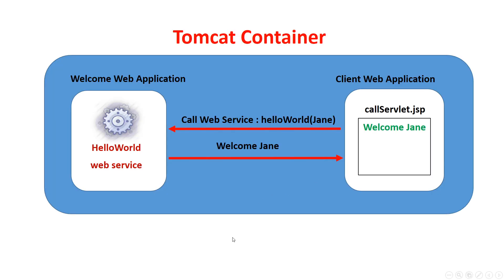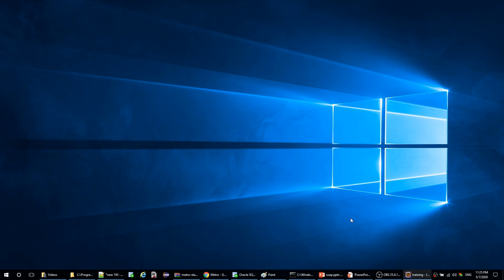In our example, there will be two web applications. The first one exposes a web service and the second one contains a simple JSP file. Inside this JSP file, we will call the web service. It's called Hello World and we pass it a name. The web service will return a welcome message plus the name it received, and it finally prints in the client application.